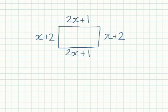Now all I need to do is add together all the x terms. So I have 2x, add x which is 3x, add another 2x which is 5x, add another x which is 6x.